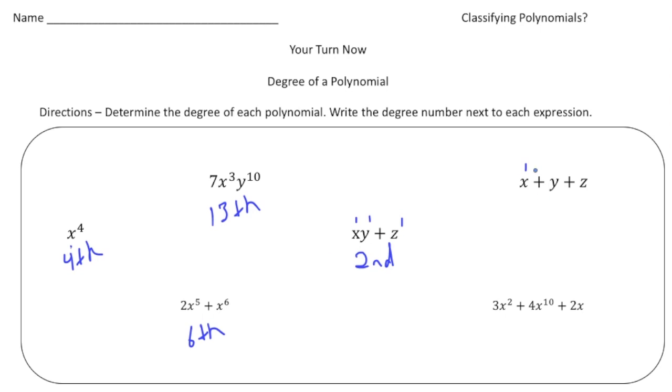Here we have an x, y, and a z. And each variable has a power to the 1. So this would just be the first degree.